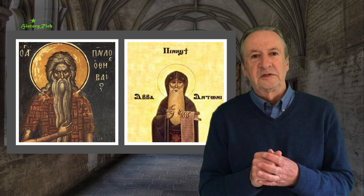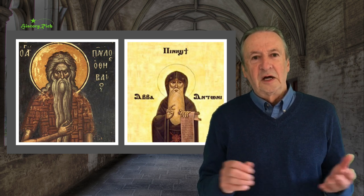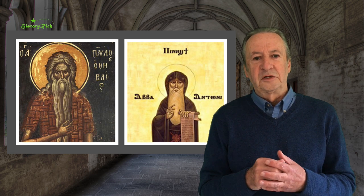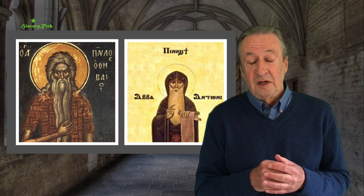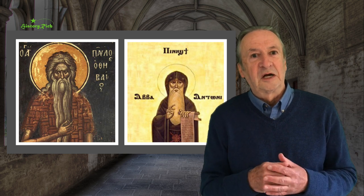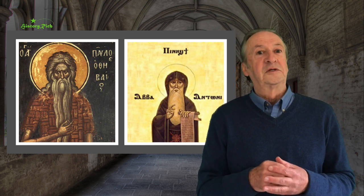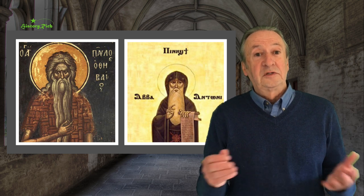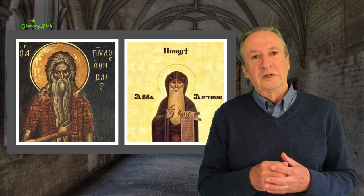Monasticism as a way of life began in Egypt in the late third century. St Paul of Thebes and St Anthony separately went to live as hermits in the desert, devoting themselves to lives of asceticism, prayer, and contemplation, and their example was followed by others. The attraction of the desert was that it offered solitude where you could seek spiritual fulfilment away from the distractions of the everyday world. And of course there was a biblical precedent: in the Gospel according to St Matthew, chapter 4, Christ is tested in the wilderness.